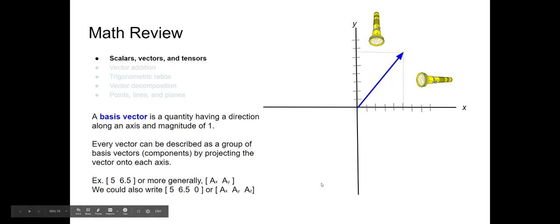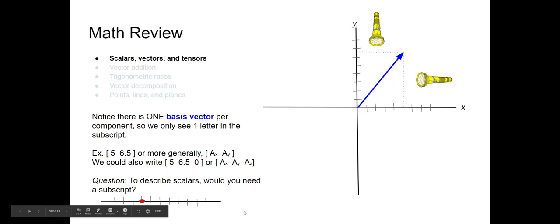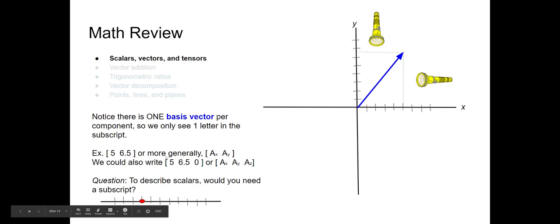We can expand this to three dimensions. This particular vector lies flat on the xy-plane — it doesn't extend into the z-direction at all. So we need zero basis vectors in z. We can write it as (5, 6.5, 0). Notice there is only one basis vector per component, so we only see one letter in the subscript — for example, the subscript x — meaning five basis vectors in the x-direction and 6.5 in the y-direction.